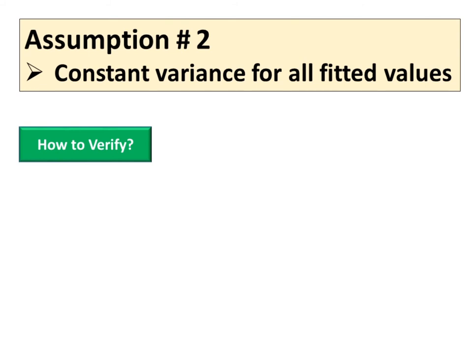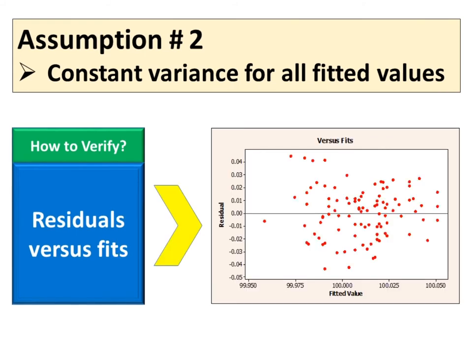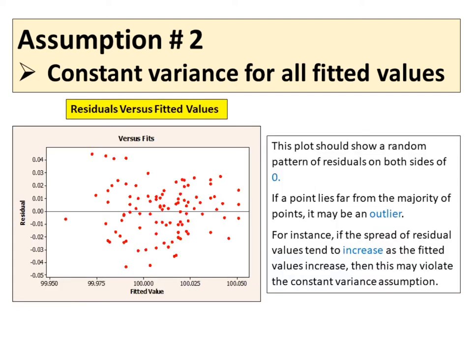The second assumption is constant variance for all fitted values. How to verify the assumption of constant variance? A method of checking the constant variance is to construct a residuals versus fitted values plot of the residuals. This plot should show a random pattern of residuals on both sides of zero.